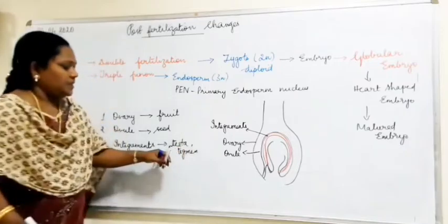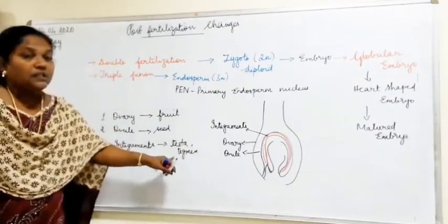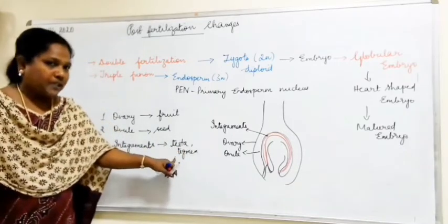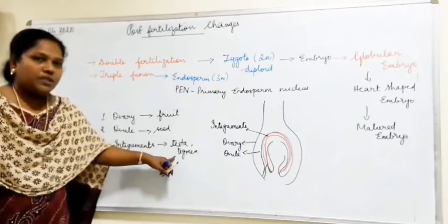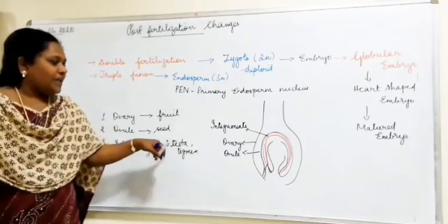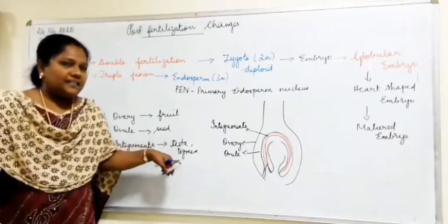So these two layers — testa and tegmen — are together called the seed coat. The name of the seed coat layers are testa and tegmen.